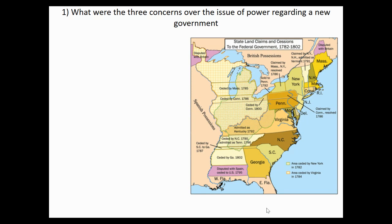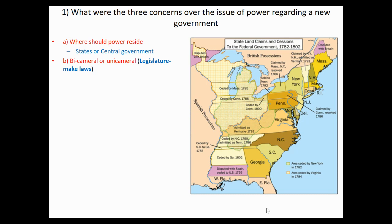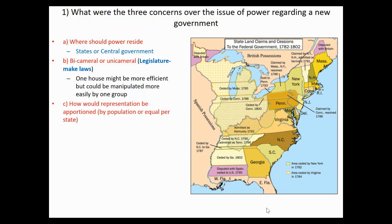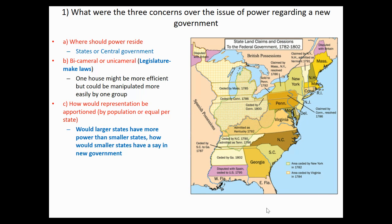In regards to having power of a new government — a central power, not just a state power — there are three concerns. Number one: where should power reside? Should it be given to the states, which are close to the people, or a central government that can rule over everybody? Also, should there be a bicameral — a two-house — or a one-house legislature? A one-house legislature is more efficient but could be easily manipulated. A bicameral legislature requires a bill to pass two houses. Most importantly, how is representation going to be proportioned — by population or per state? Larger states would have more power with proportional representation, so how would smaller states have a say?